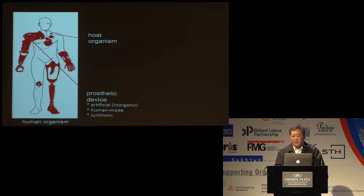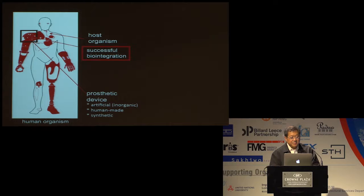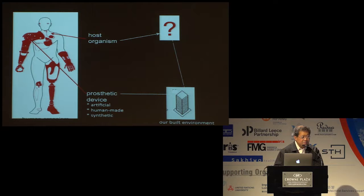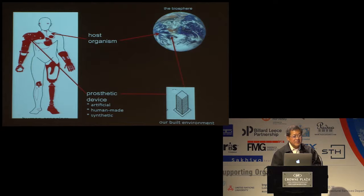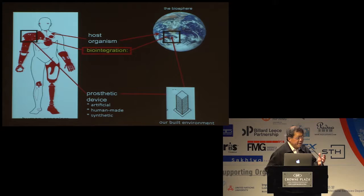Then everything depends on successful biointegration of the prosthetic device with the host organism. Otherwise, if it doesn't, then the perceived device fails or breaks down or the host organism is affected. In my early work, I saw an analogy of this with what we do as architects and designers. Our built environment, our buildings — it's artificial, it's human-made, it's synthetic. The question then is: what is this host organism that has to be connected to? That's very simple — it's the biosphere, the organic environment that we are in. Everything depends on successful biointegration, and it is this failure in successful biointegration that is the cause of all of our environmental problems.